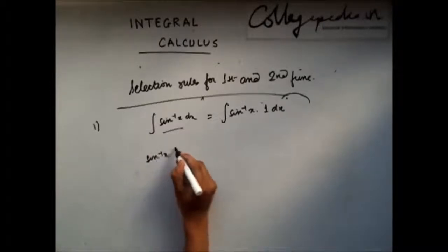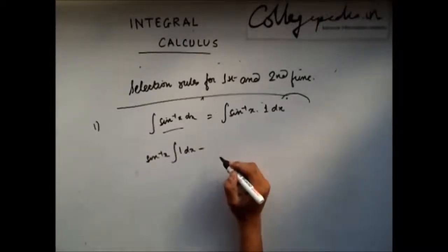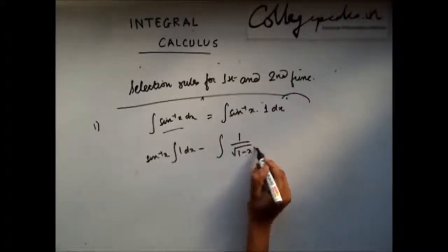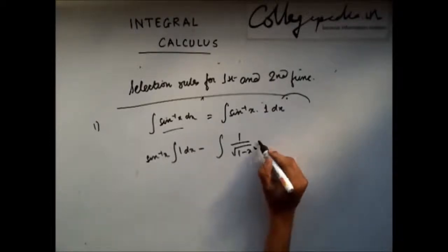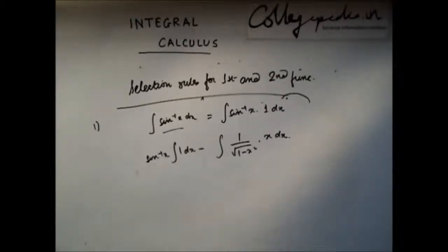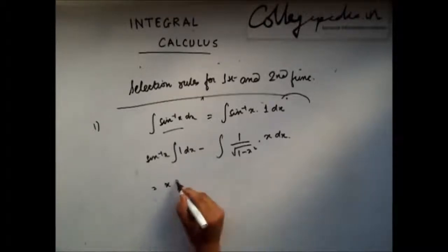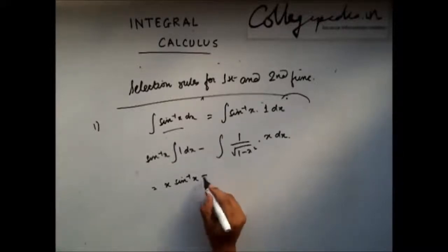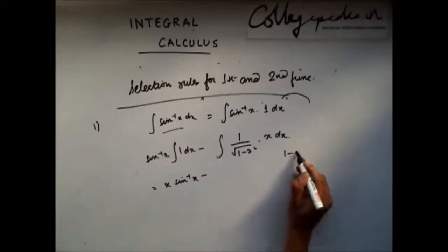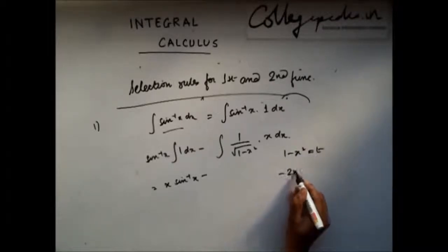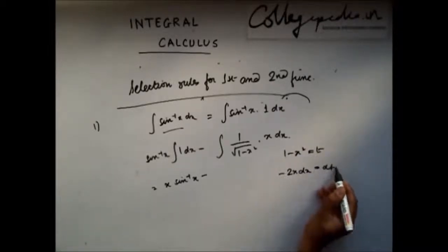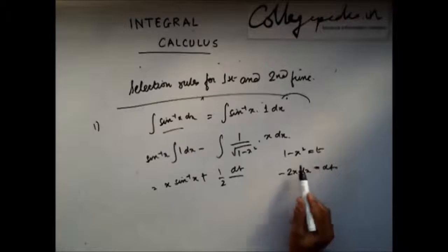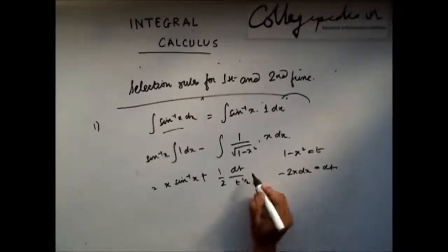So the answer will be: sine inverse x times the integration of 1 dx, minus the differentiation of sine inverse x, which is 1 over root(1 minus x²), times the integration of 1, which is x dx. Here you can write 1 minus x² as t, so minus 2x dx will be dt, giving you half dt divided by t to the power half.